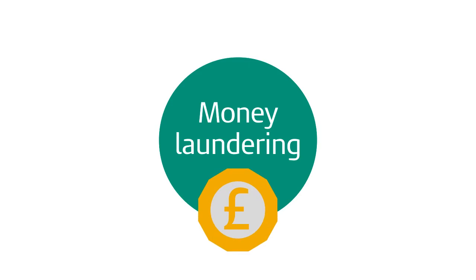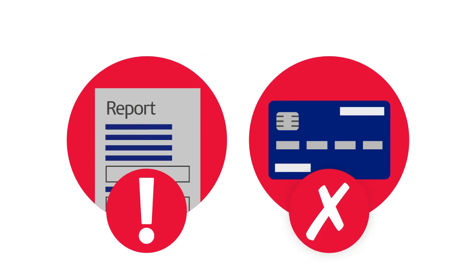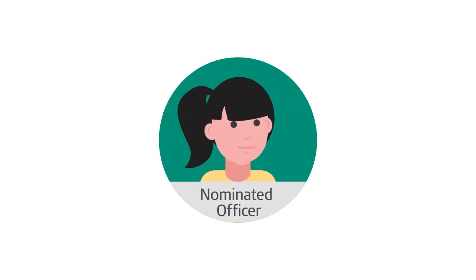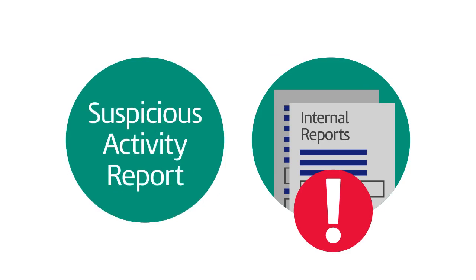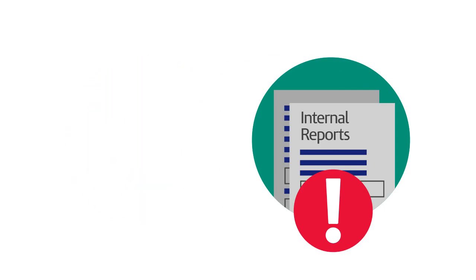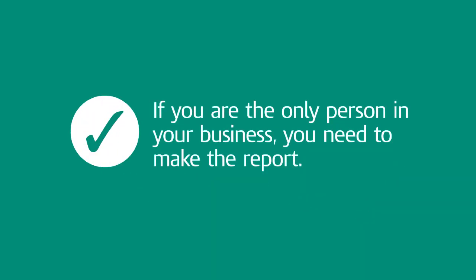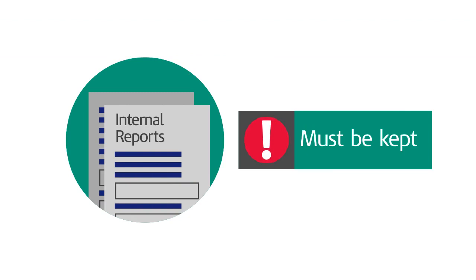If you know or suspect someone is engaged in money laundering or terrorist financing, you must make a report even if no transaction takes place. You don't have to know what sort of crime may have been committed. The nominated officer in your business must consider all internal reports and decide if a suspicious activity report, also known as SAR for short, should be sent to the National Crime Agency. If you are the only person in your business, you need to make the report. Internal reports must be kept as part of your business records.